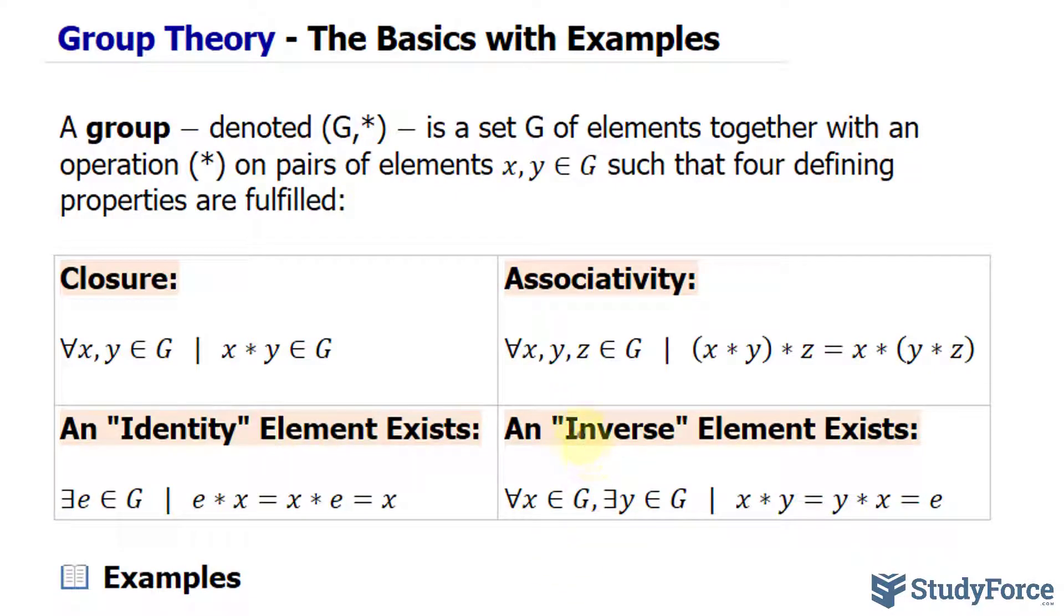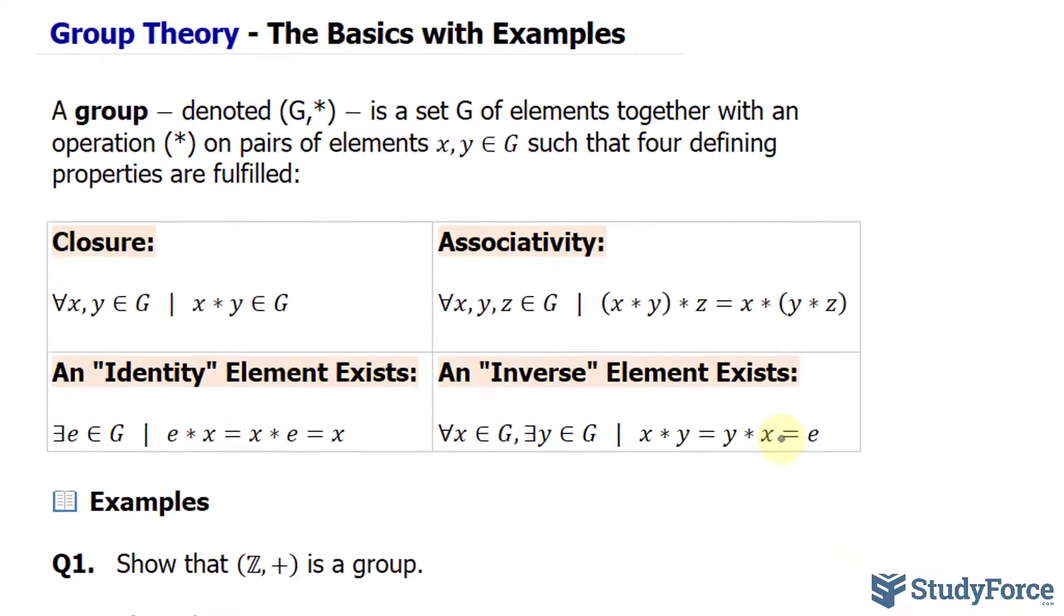Finally, the last principle is that an inverse exists for each element. We represent that as: for all x in G, there exists a y also in G such that their operation gives the identity. Those are the four basic principles.